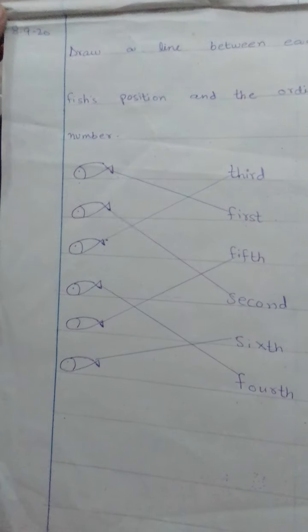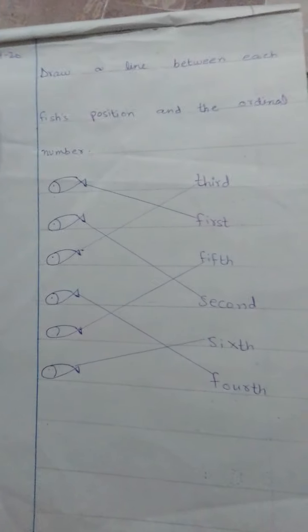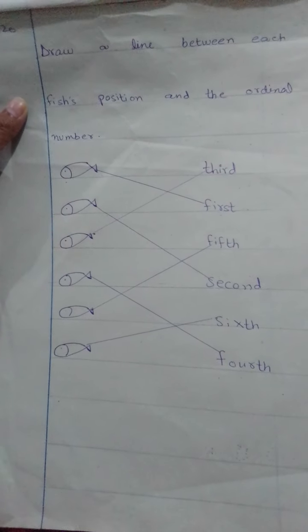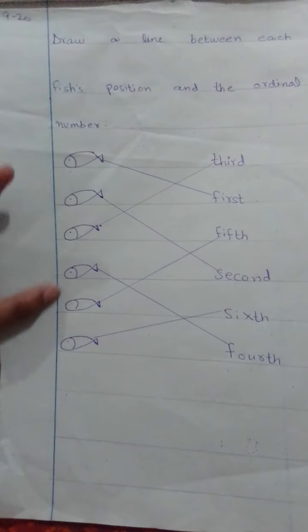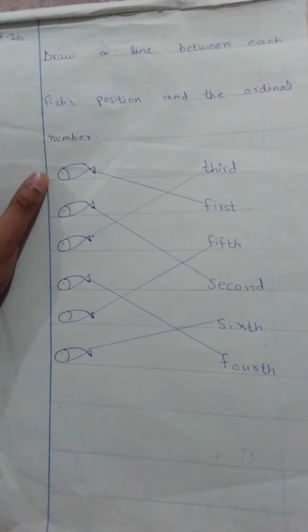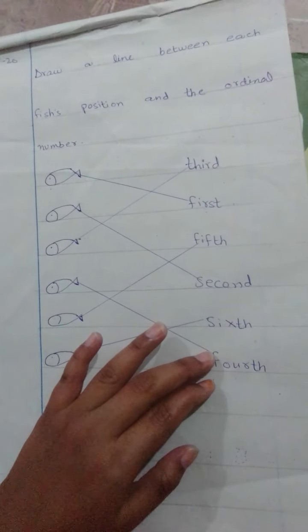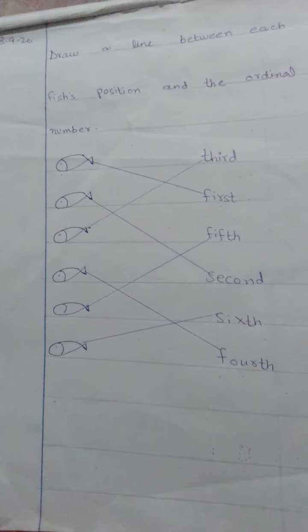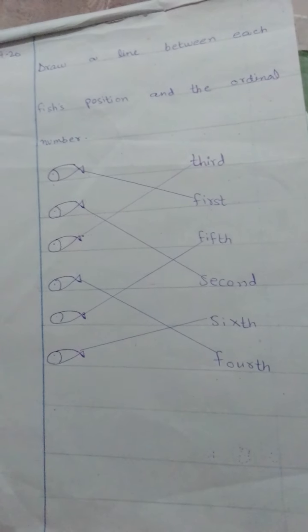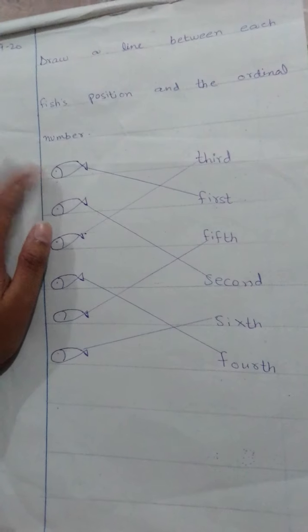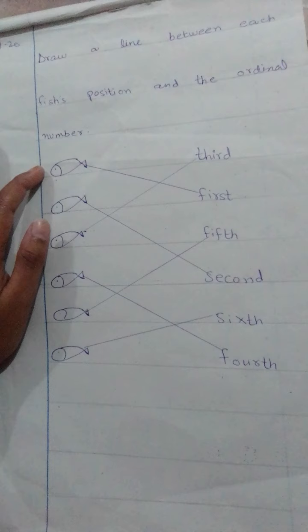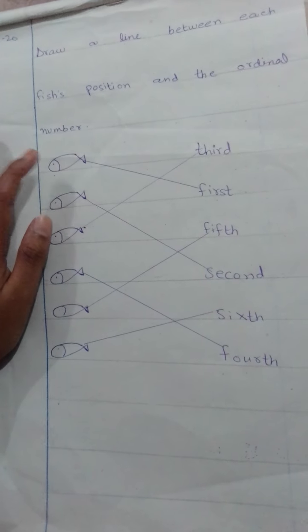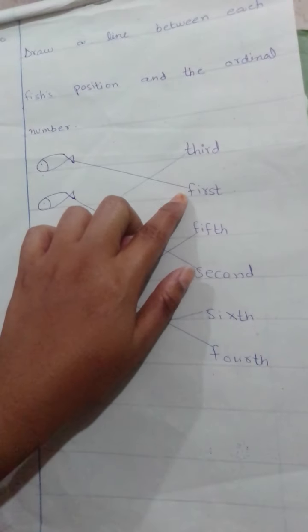Open your next page. Write the date 8/9/20. The question says: draw a line between each fish position and the ordinal number. You have 6 fish, and on the other side you have the ordinal numbers. You have to match the fish's position with the correct ordinal number.